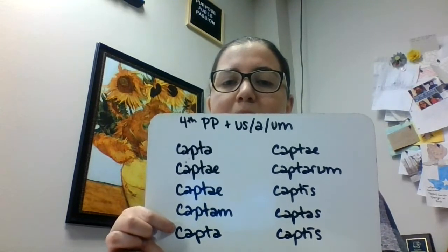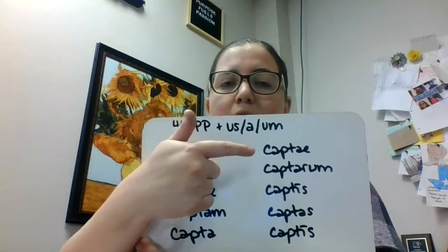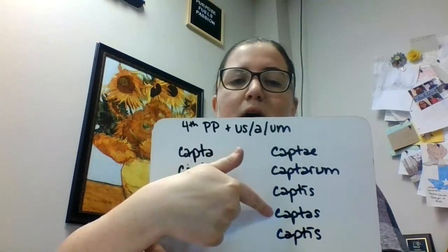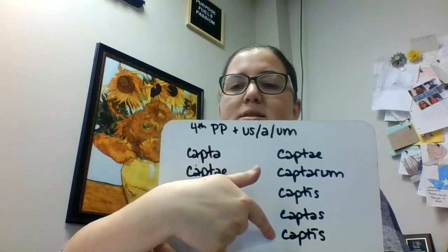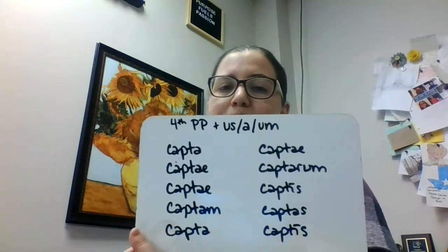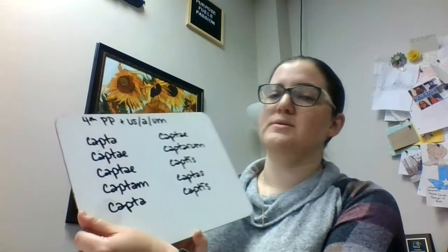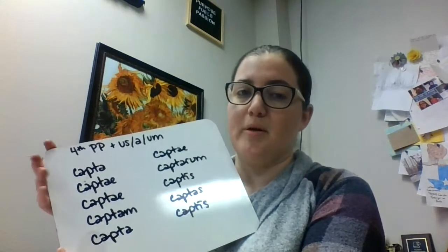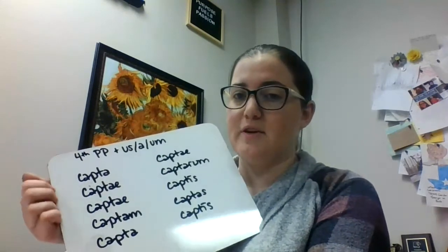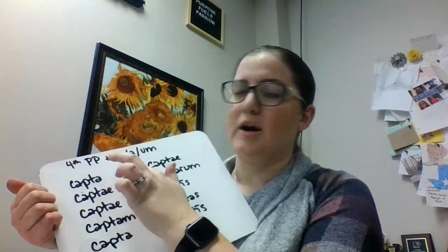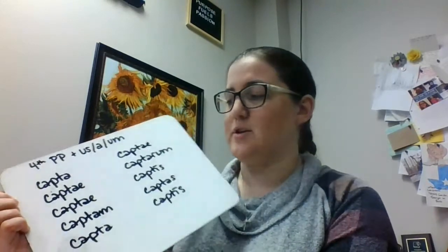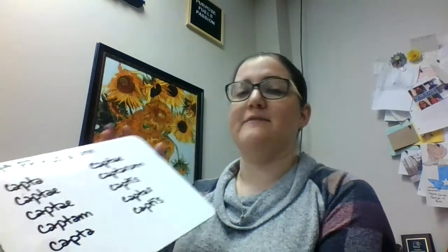Captam, capta, captae, captarum, captis, captas, captis. Notice we're just using the fourth principal part — this is that same thing we used when we did our perfect passive verbs with our fourth principal part and our form of sum, but our participle doesn't have that form of sum. And again, first and second declension endings on that one.